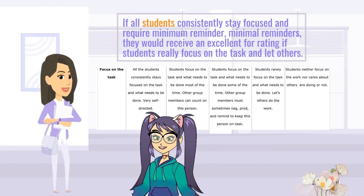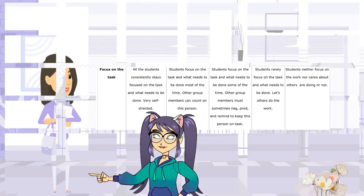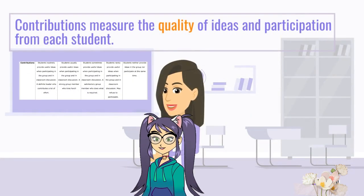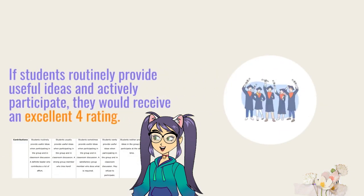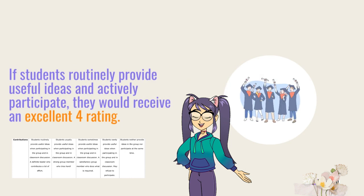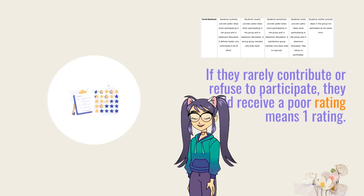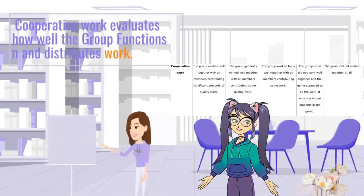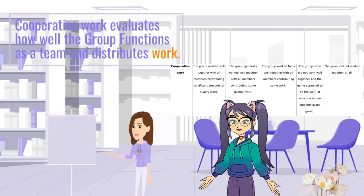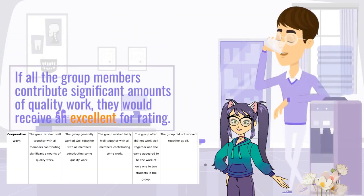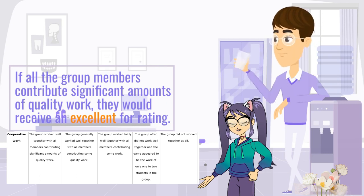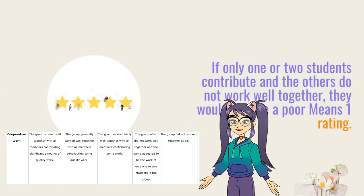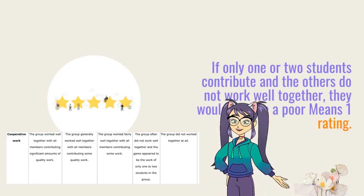If students rarely focus on the task and let others do the work, they would receive a poor rating of 1. Contributions measure the quality of ideas and participation from each student. If students routinely provide useful ideas and actively participate, they would receive an excellent rating of 4. If they rarely contribute or refuse to participate, they would receive a poor rating of 1. Cooperative work evaluates how well the group functions as a team and distributes work. If all group members contribute significant amounts of quality work, they would receive an excellent rating of 4. If only one or two students contribute and the others do not work well together, they would receive a poor rating of 1.